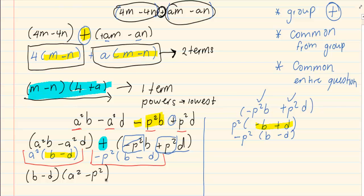How do we check if we're done? Number one, I have one term, which is fine. But are my powers at the lowest? Are my powers at the lowest that it can go? If you look at the first bracket, b minus d, it is. But a squared minus p squared, you can continue. There is difference of two squares, which will be a minus p, a plus p. Now you've completely factorized.